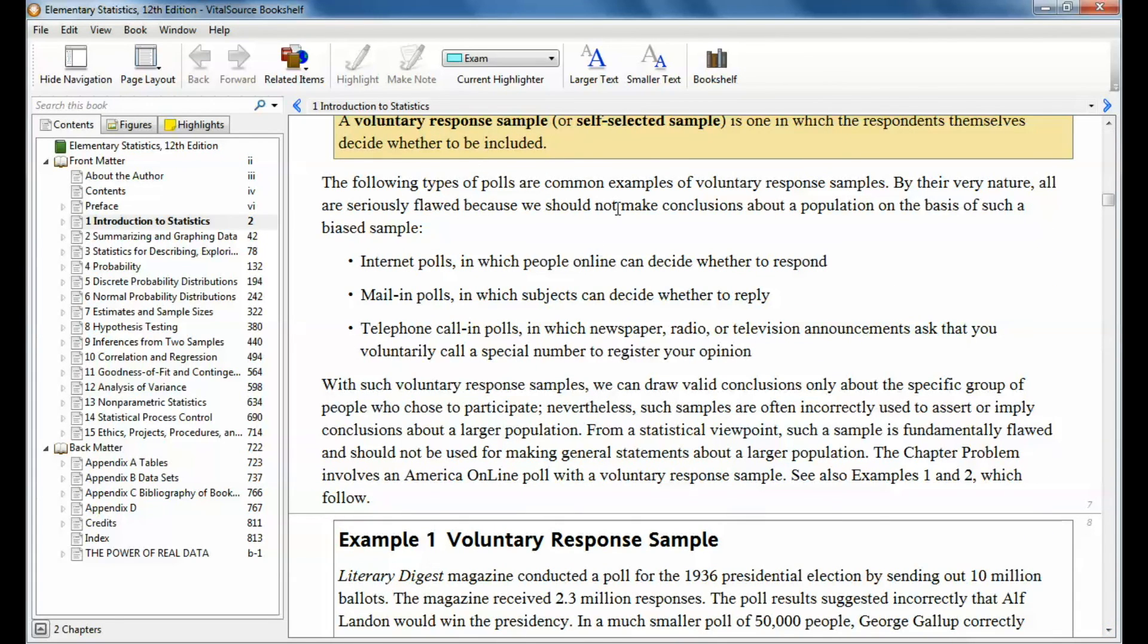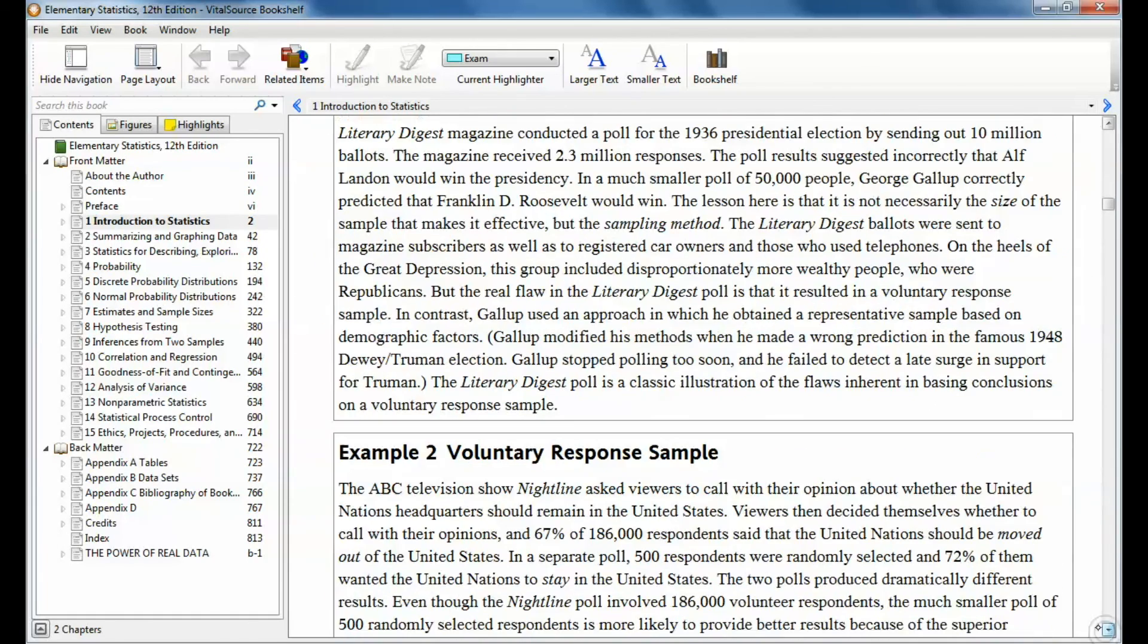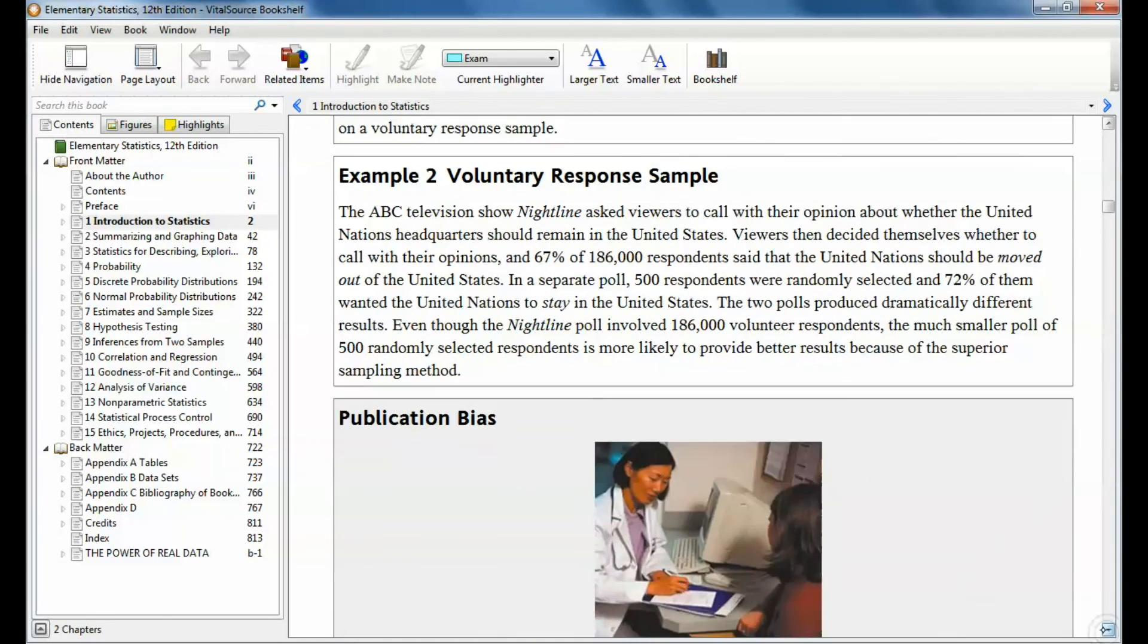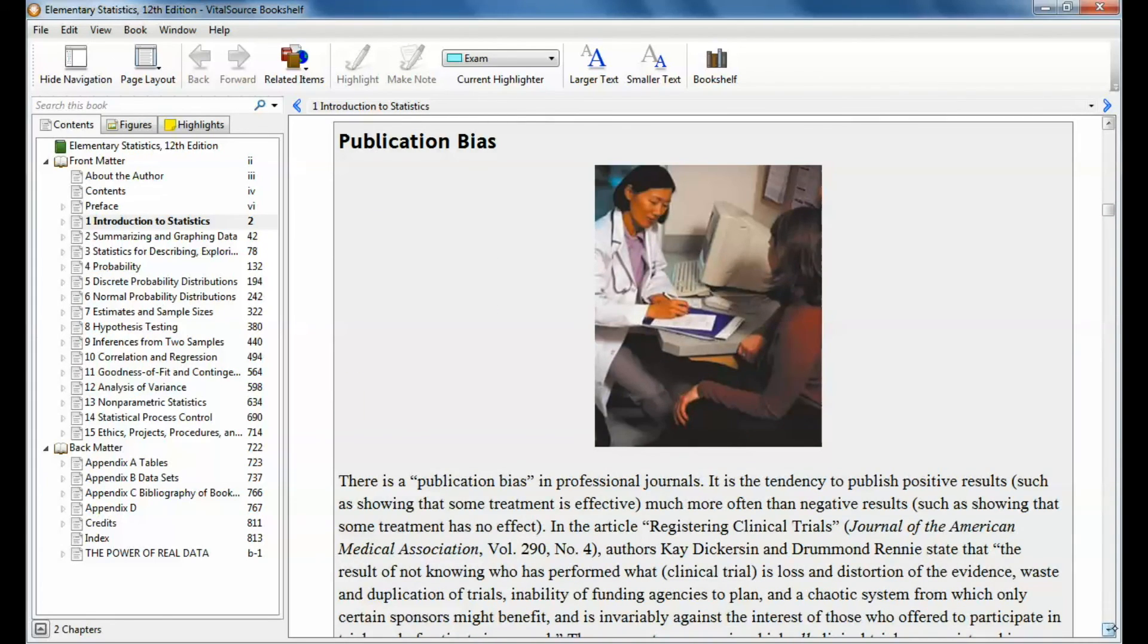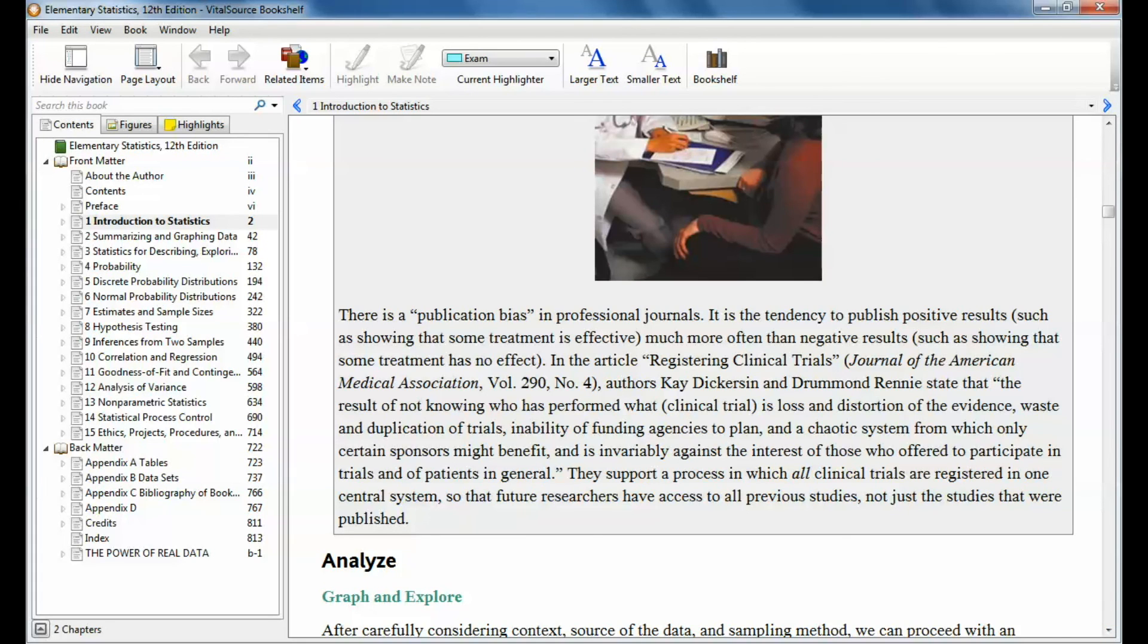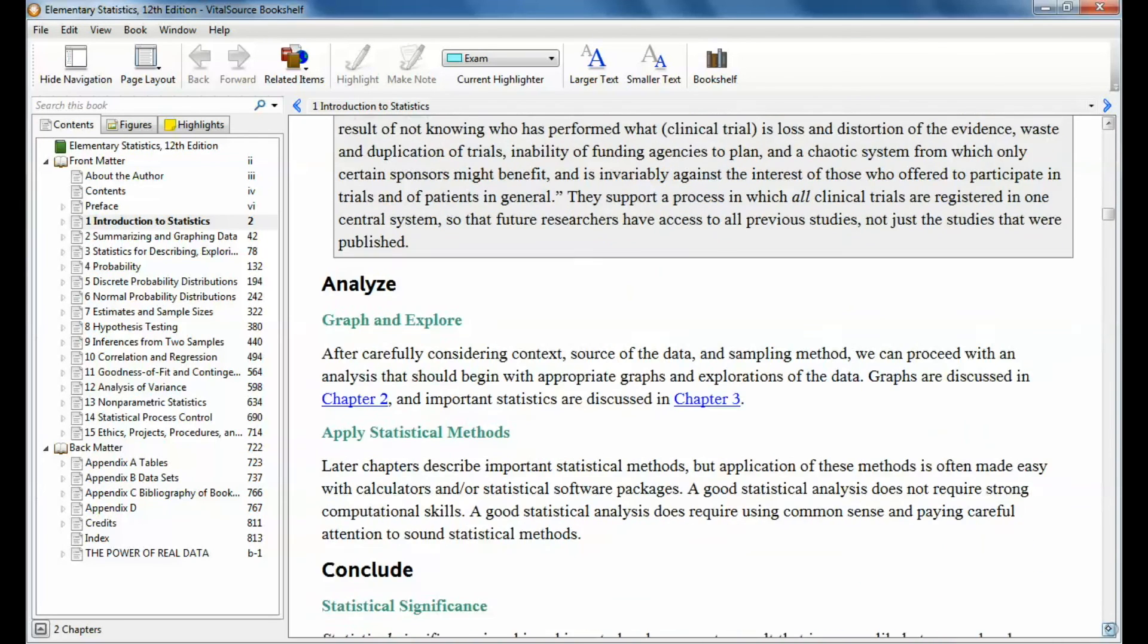Here are some common examples of voluntary response samples. Internet polls, mail-in polls, telephone, call-in polls. Internet polls, they will survey you to death on the Internet. It seems like I can't go to any website now without a little pop-up coming up saying, would you mind taking a survey before you leave or something like that. They're really interested in your information. Everybody wants your information. Your book gives some good examples of voluntary response samples. Good to read through these just to see real-world examples of this stuff going on.